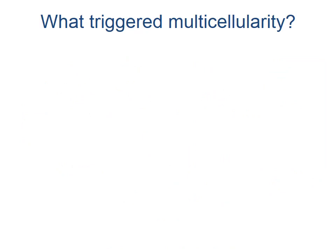Sequencing of the Monosiga brevicollis genome thus revealed that the ancestor of choanoflagellates and animals already possessed many of the genes required for animal multicellularity. But what triggered the evolution of multicellularity in this group of organisms?